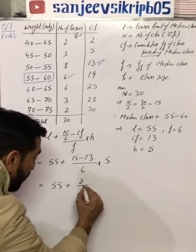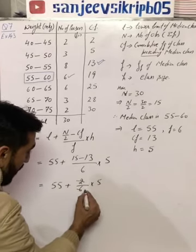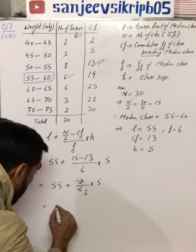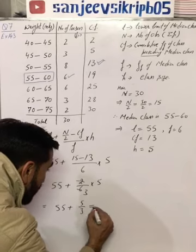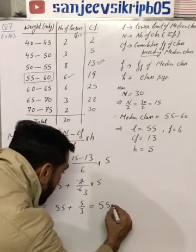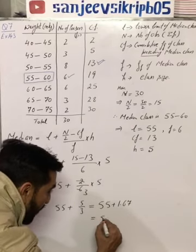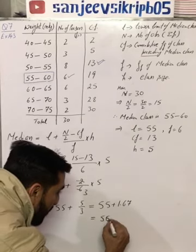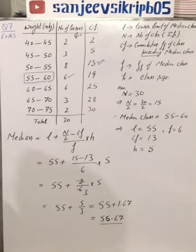So if we solve this: 55 plus, 2 cancels with 6 giving 3, so we have 55 plus 5 by 3. Solving this gives 1.67, and if we add these, the median comes to be 56.67.